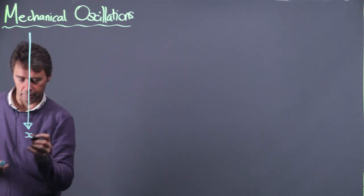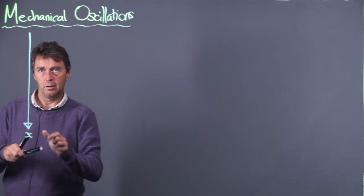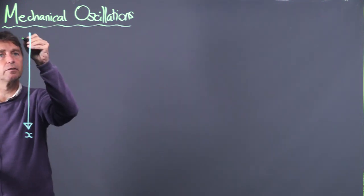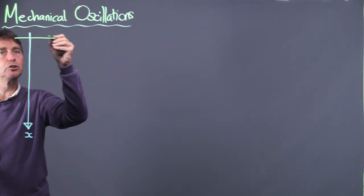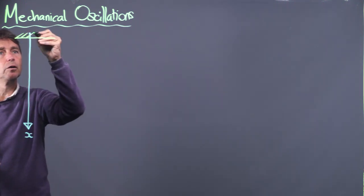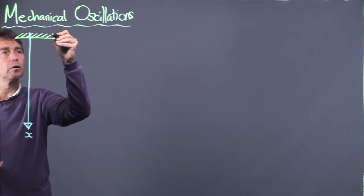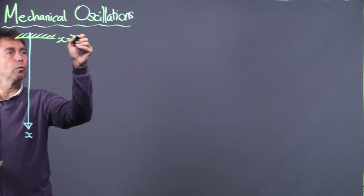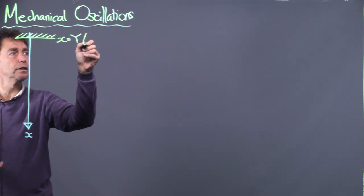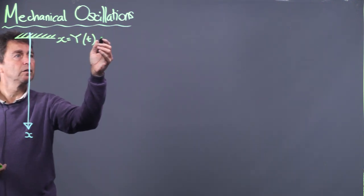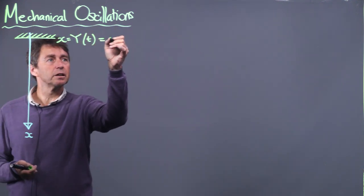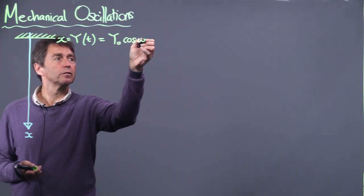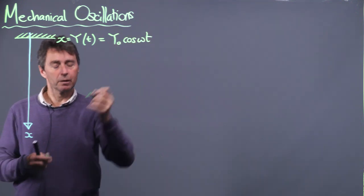I imagine that I have a stage which is at position Y(t), which I'm going to say is Y₀ cosine of ωt.